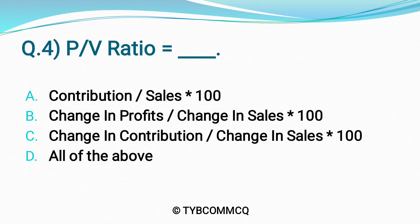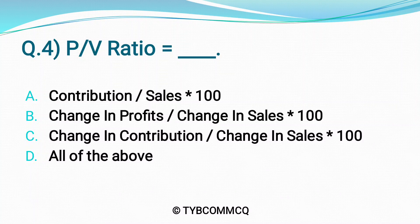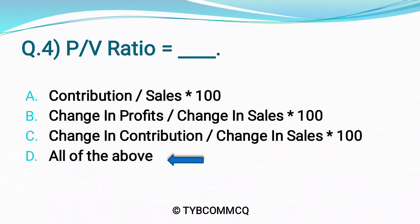Question No. 4: PV Ratio is equal to ___. Option A: Contribution divided by Sales into 100. Option B: Change in Profit divided by Change in Sales into 100. Option C: Change in Contribution divided by Change in Sales into 100. Option D: All of the Above. The correct option is Option D — All of the Above.